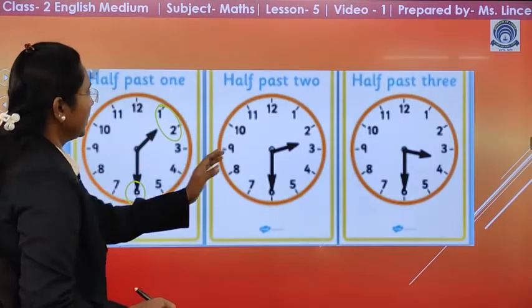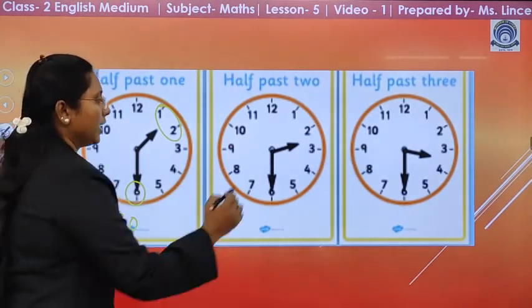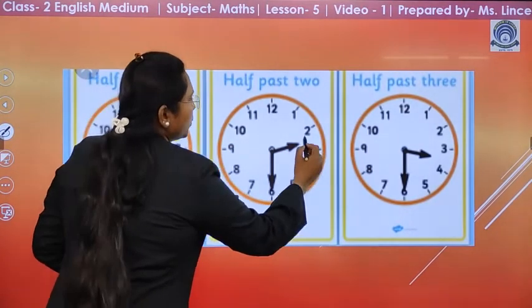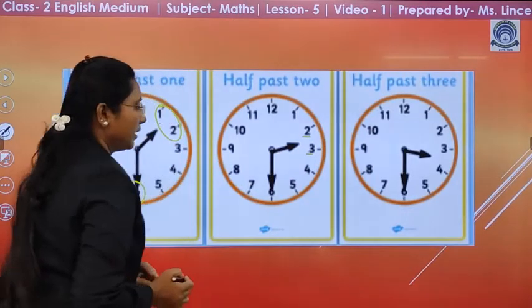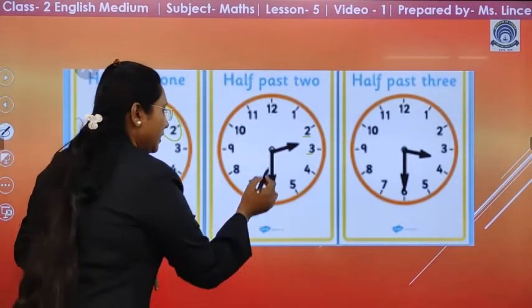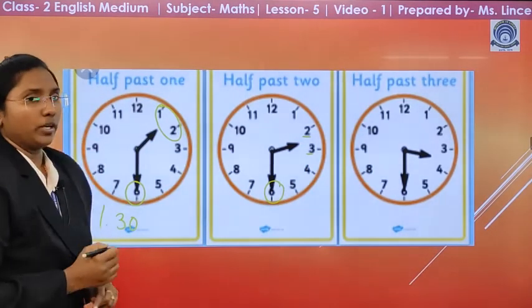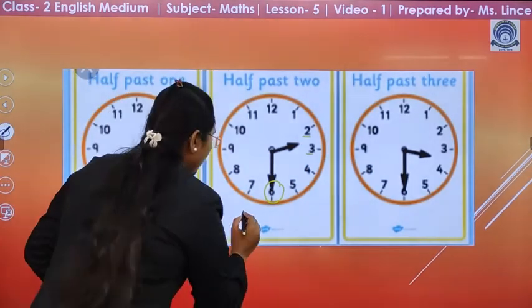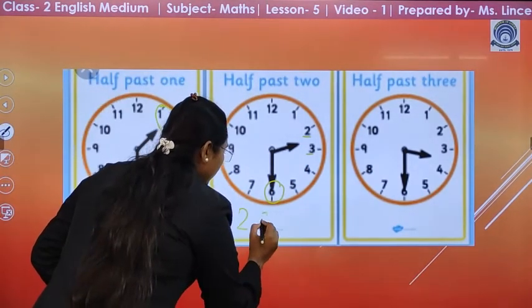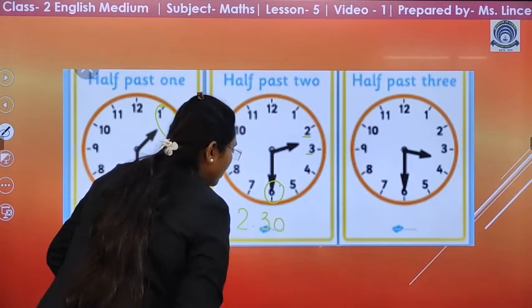Now, next, the hour hand is between 2 and 3 and again, the minute hand is on 6. So, what is the time? 2 hour, 30 minutes. 2 past 30.